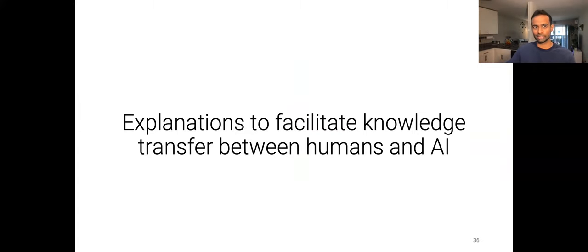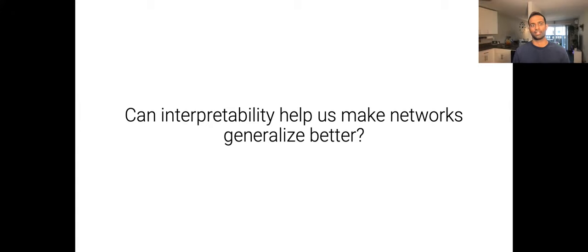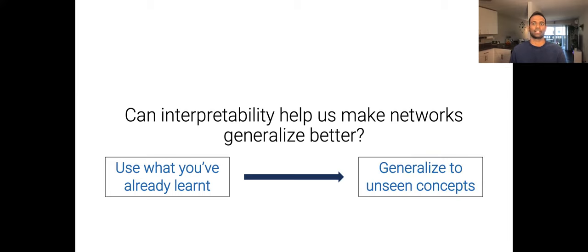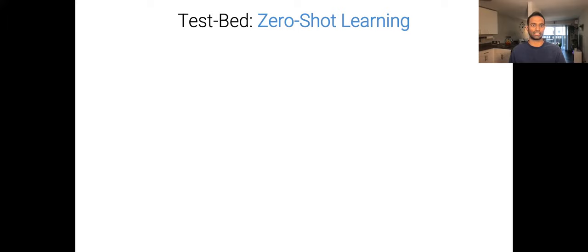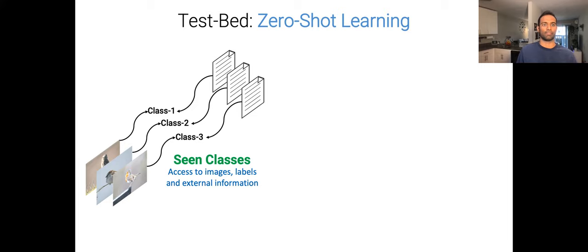Now we look at how explanations can facilitate knowledge transfer between humans and AI. This was ECCV 2018 work called 'Choose Your Neuron: Incorporating Domain Knowledge Through Neuron Importance.' We ask: can interpretability help us make networks that generalize better? Can knowing what the network has already learned help us make it generalize better? We use the testbed of zero-shot learning, where you have a bunch of scene classes with images, associated class names, and descriptions such as attributes, Wikipedia articles, or captions.